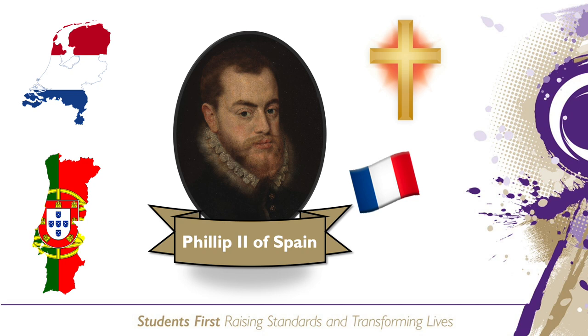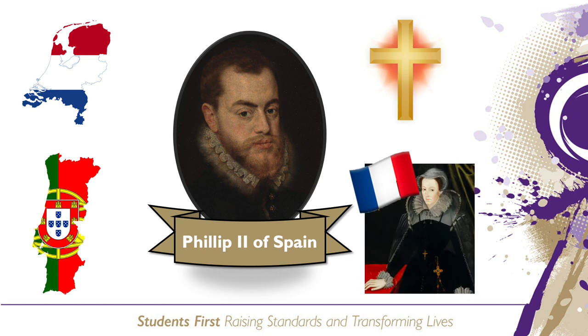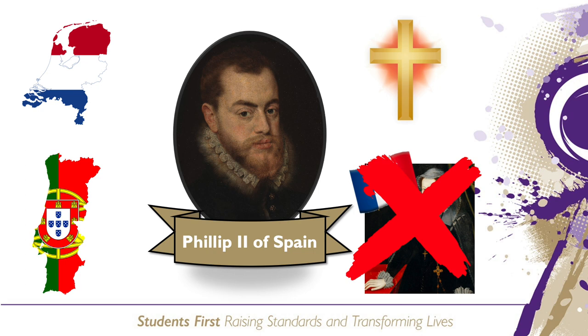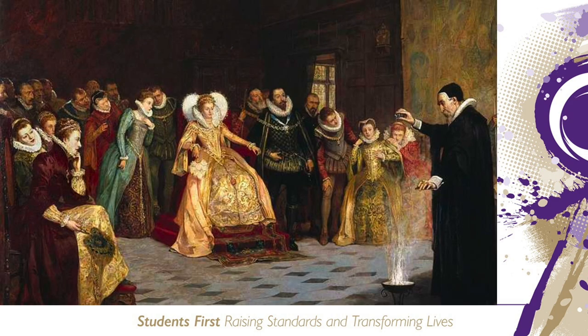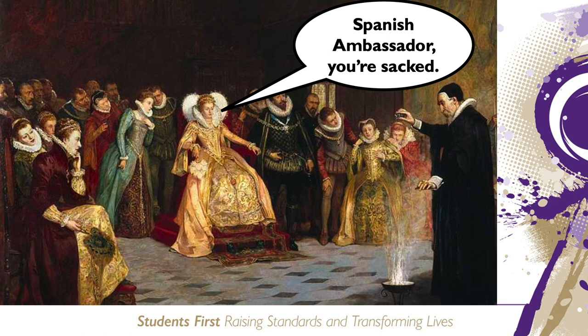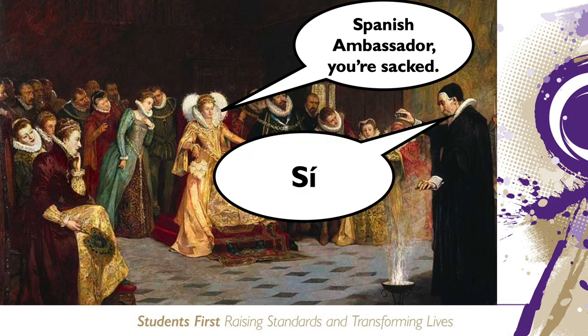Philip preferred to have Elizabeth as Queen of England due to Mary Queen of Scots having a strong alliance with France. He was concerned that if Mary ruled England they would form an alliance with France. So even though Philip was involved in plots against Elizabeth and was aware of them, he never actually did anything concrete to support the plots such as sending an army. From Elizabeth's perspective, Philip's interference was annoying, but she reacted by removing Spanish ambassadors from court rather than declaring war, as she was very aware that England was in no position to take on the might of Spain.